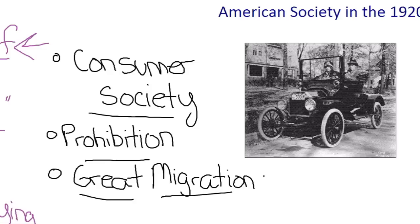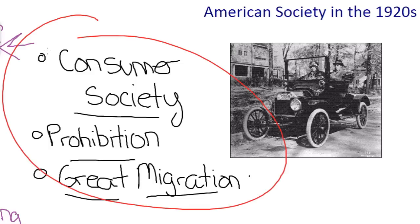Ultimately, these three trends — the trend of consumer society, the trend of prohibition, and the trend of the Great Migration — have a huge impact on the United States in the 1920s and really shape American society in a profound way that even to this day can be seen. You can still see the hints of these 1920s trends in modern American society.